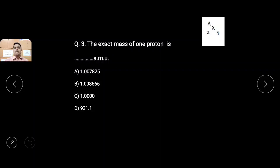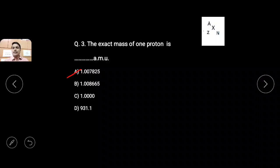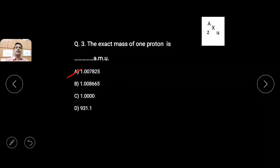Third question: the exact mass of one proton is — the exact mass of one proton is 1.007825 amu. If neutron is asked instead, note that the neutron is heavier than the proton. The exact mass of one neutron is 1.008665 amu — that would be option B. But here the question asks for the exact mass of one proton, so the answer is A: 1.007825 amu.